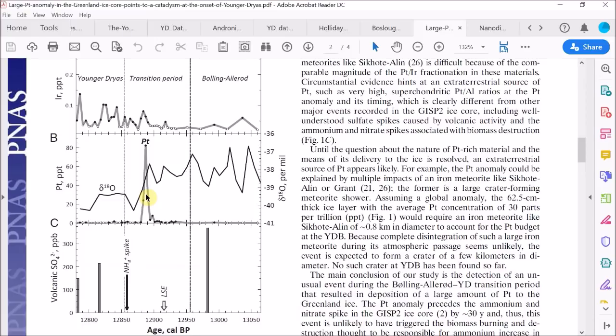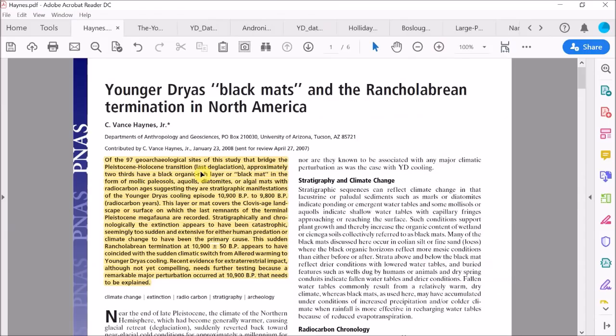However, we've so far seen relatively little evidence produced by the Comet Research Group supporting claims of megafaunal extinctions at this time. Instead, for this kind of evidence we can look to the 2008 paper by Vance Haynes, which summarizes a lifetime of archaeological research into this question.